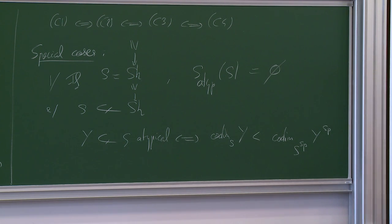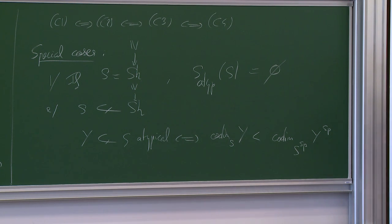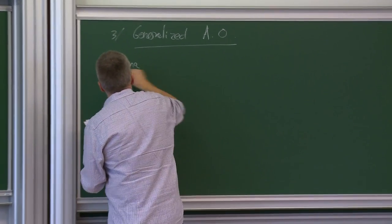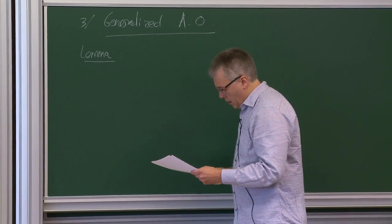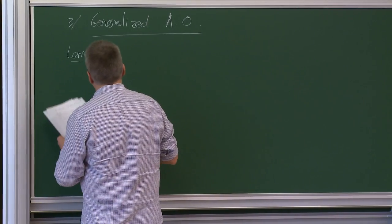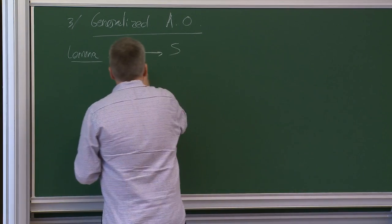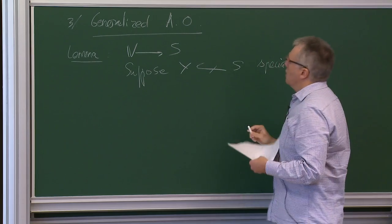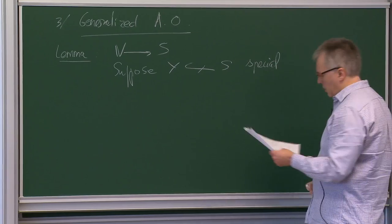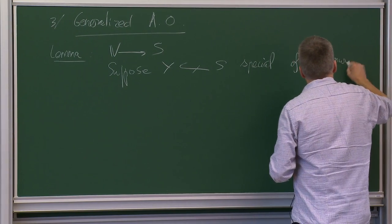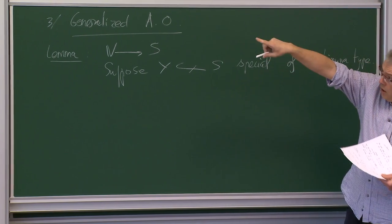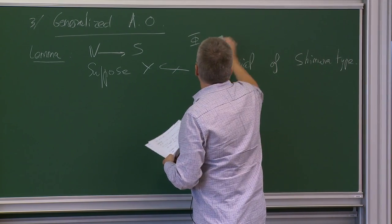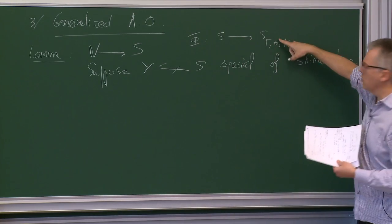A particular case of this conjecture is a generalized Andreort conjecture. The lemma is: you try to understand when is a CM point atypical. The general criterion: suppose you have a variation of Hodge structure over S, and Y is an irreducible sub-variety of S which is special — a pre-image by the period map of a special sub-variety in S-Gamma-G-M — and of Shimura type. This means it is a pre-image of a Mumford-Tate quotient which is in fact a Shimura sub-variety.